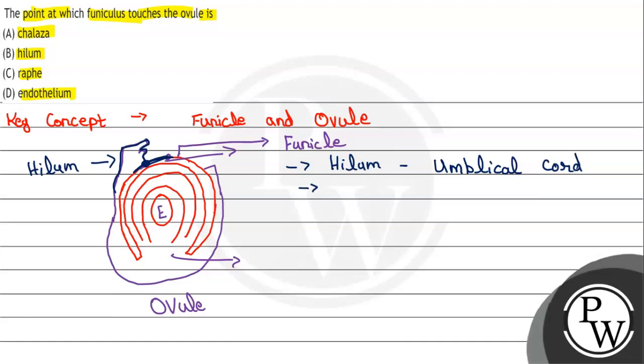The first option given to us is chalaza. If we talk about chalaza, it is basically present at the two ends. We know there are two ends in the ovule: the chalazal end and the micropylar end. These are the two ends.